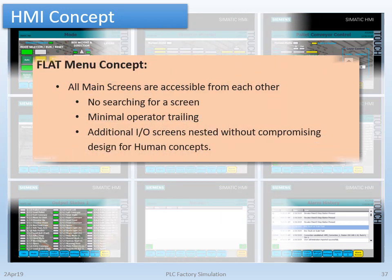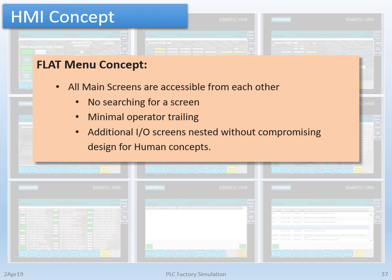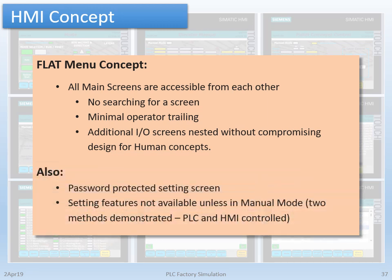So what is a flat menu concept? Simply stated, all main screens are accessible from each other. There's no searching for screens, there's minimal operator training involved, and additional IO screens can be nested without compromising the design for human concept. I've also included a password-protected settings screen with features not available unless in manual mode. So there are two methods demonstrated here — PLC controlled and HMI controlled — and I was able to embed that all into the flat menu concept.